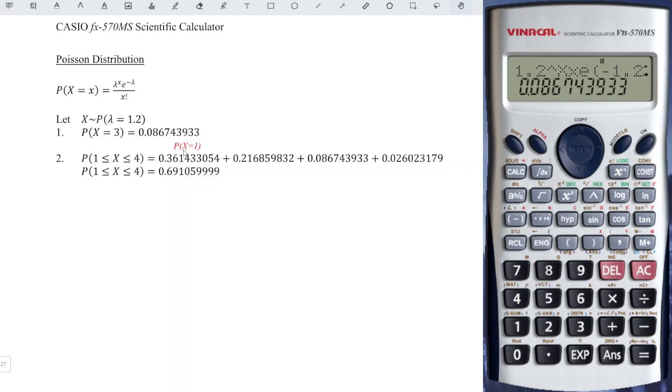First, we obtain the probability for x is equal to 1. So we calculate again. When x is equal to 1, we press equal. So we already obtain the probability, and we don't immediately proceed to when x is equal to 2. Because at the end, we have to sum up all the probabilities here. So I will first store the value.